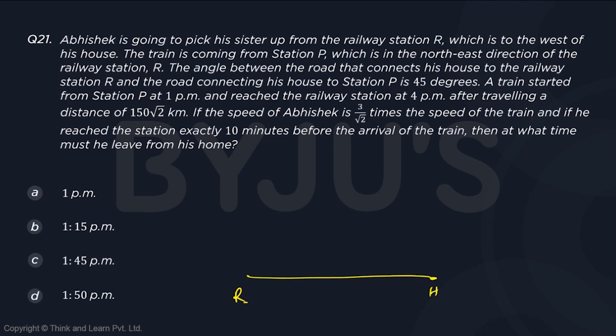The train is coming from station P, which is in the northeast direction of the railway station R. Northeast means this is 45 degrees. P is somewhere — I don't know where exactly P is, but that's okay.